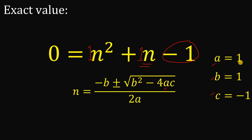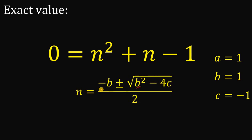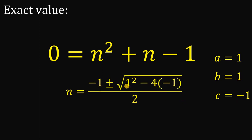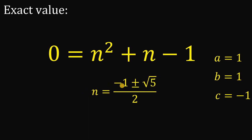Let's replace all a with its value 1, all b with its value 1, and all c with its value negative 1. Now let's simplify: 1 squared is 1, minus 4 times negative 1. Negative 4 times negative 1 is positive 4, so 1 plus 4 gives us 5. Therefore n must be equal to negative 1 plus or minus square root of 5, all over 2.